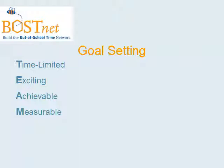Goals should have a start and an end date where you measure progress over a given amount of time. Exciting goals are motivational and inspirational and keep staff engaged over the long term. Achievable goals must be realistic and attainable. Measurable goals will have a specific outcome in mind and a way to measure success — they won't be vague or open-ended like 'to have more fun' or 'to be nicer to my colleagues.'